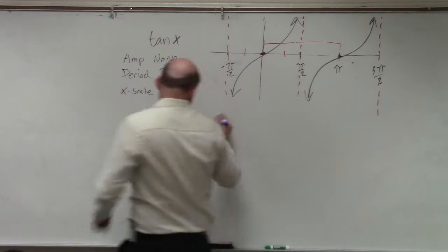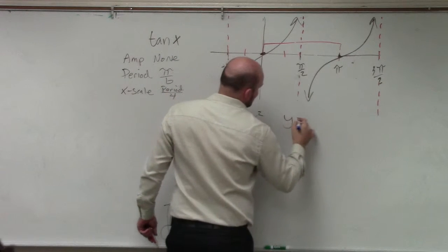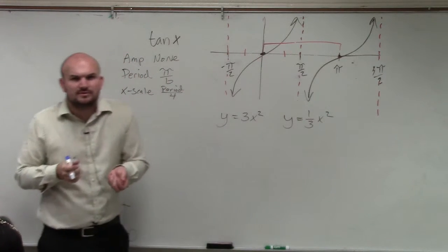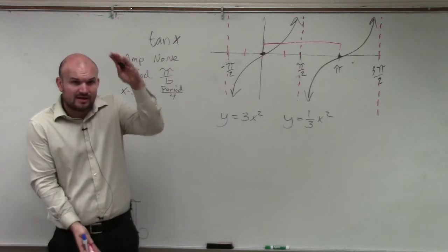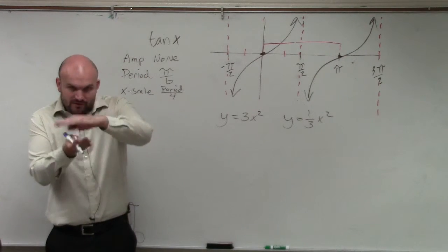Because what happens is, do you guys remember a quadratic? If I had y equals 3x squared compared to y equals 1 3rd x squared, what did this 3 do? What did the 3 do to the graph? It stretched it. Right? And what did the 1 3rd do? Shrunk it. You could say it shrunk it, right? Compressed it.